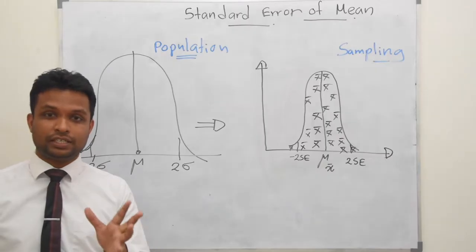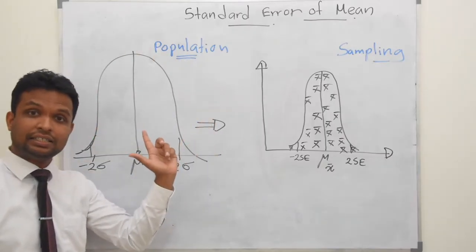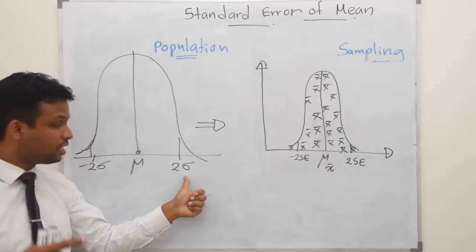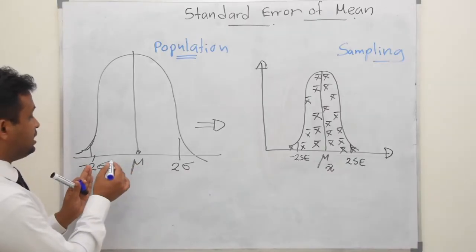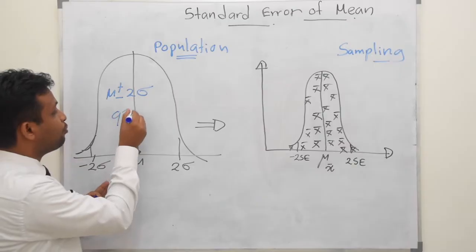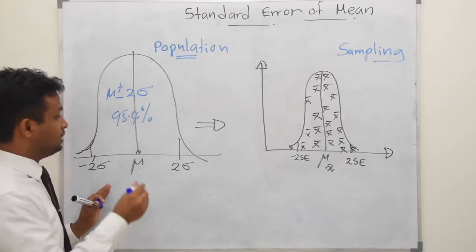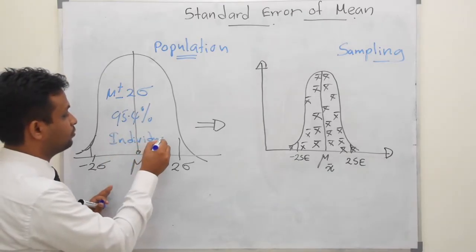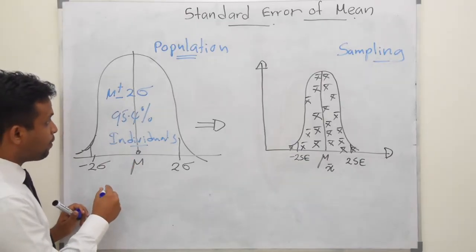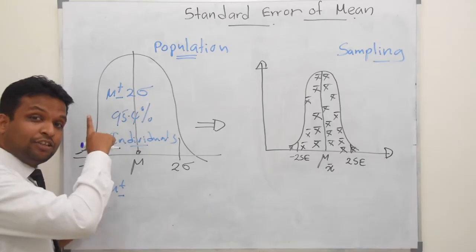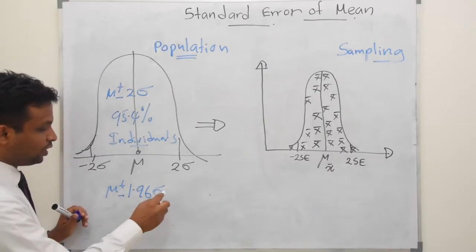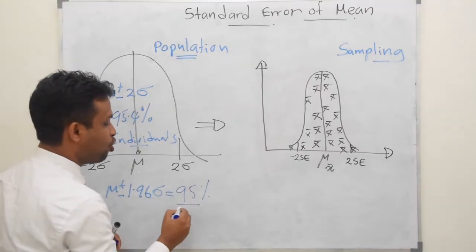As I showed in the previous lecture, this is the population distribution. The population mean is mu, which is a constant, and the standard deviation of the population is sigma. We have two sigma here and two sigma here. Within mu plus or minus two sigma, 95.4% of individuals are contained. As discussed in the normal distribution lecture, mu plus or minus 1.96 sigma will consist of 95% of the individuals.